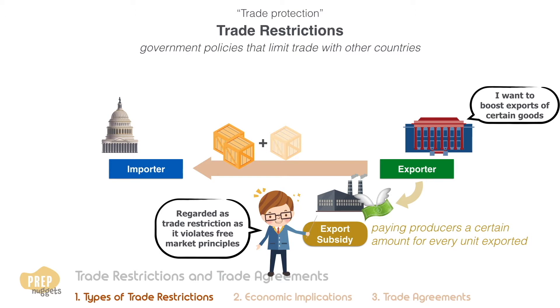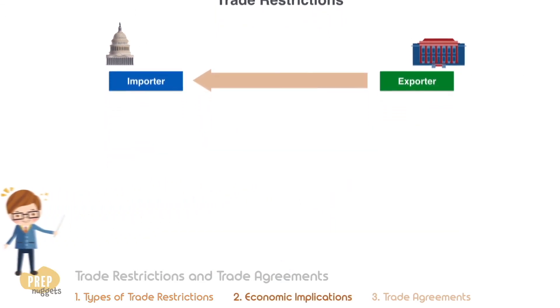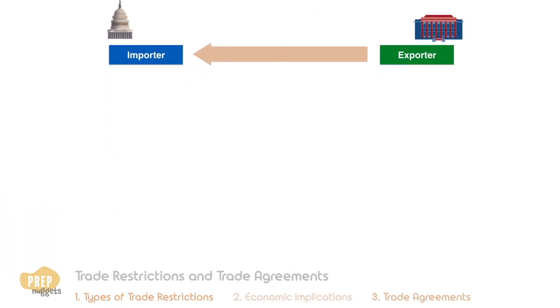Each of these four trade restrictions can affect both the importer and exporter differently. Let's examine the economic implications, starting with the importer's domestic market.